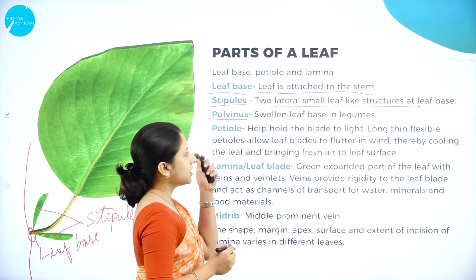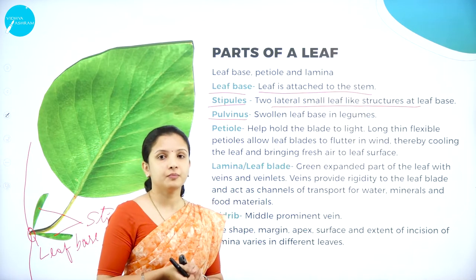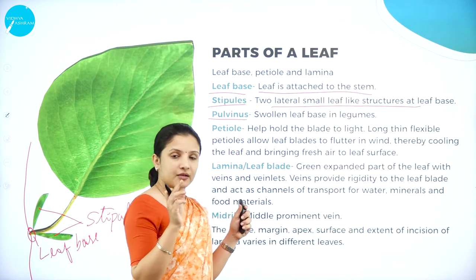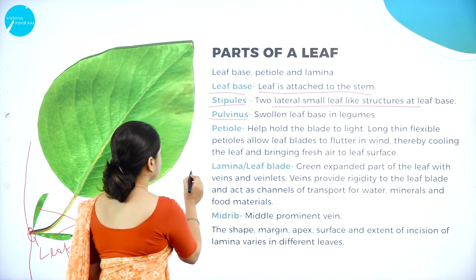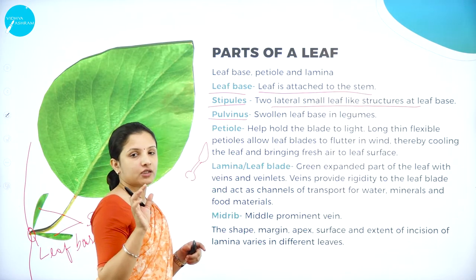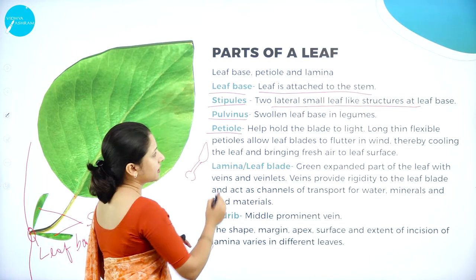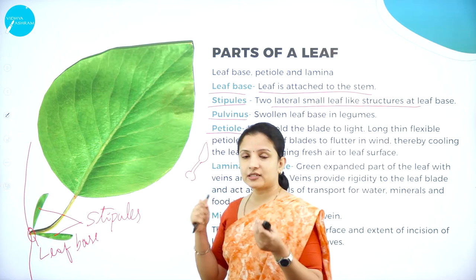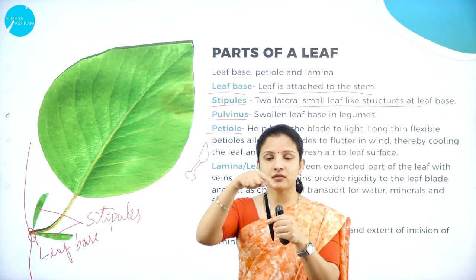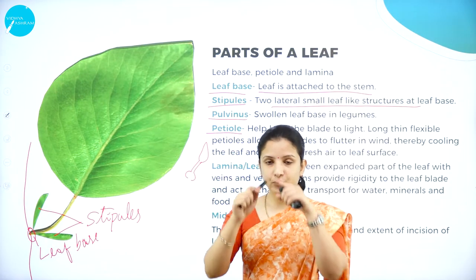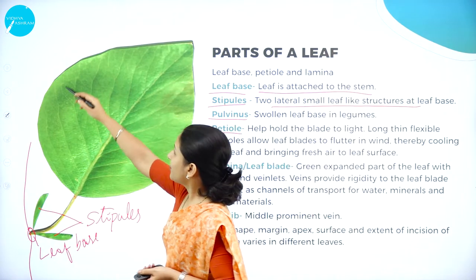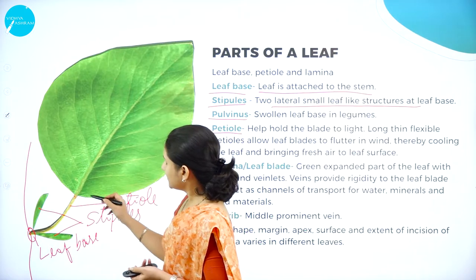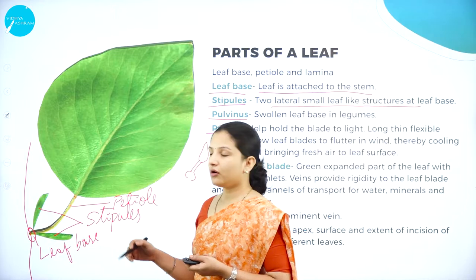The next important part is the pulvinus. The pulvinus is not present in all plants but is usually seen in leguminous plants. In leguminous plants, at the base of the leaf there is a small swollen portion, and that swollen portion is called the pulvinus. The next important part, generally found in all leaves, is the petiole. The petiole actually helps to hold the leaf blade — just like a stick supports a hand fan — giving support to the entire lamina.